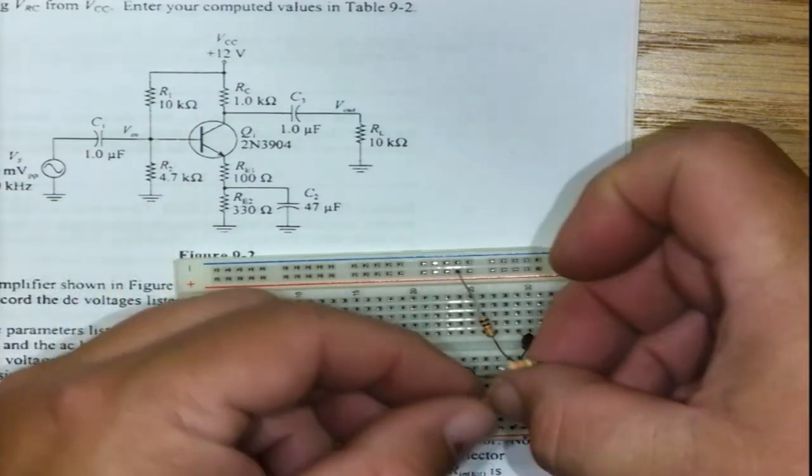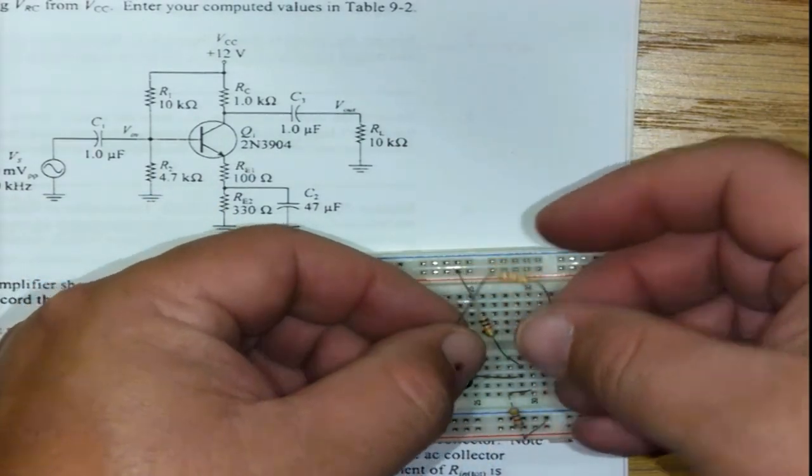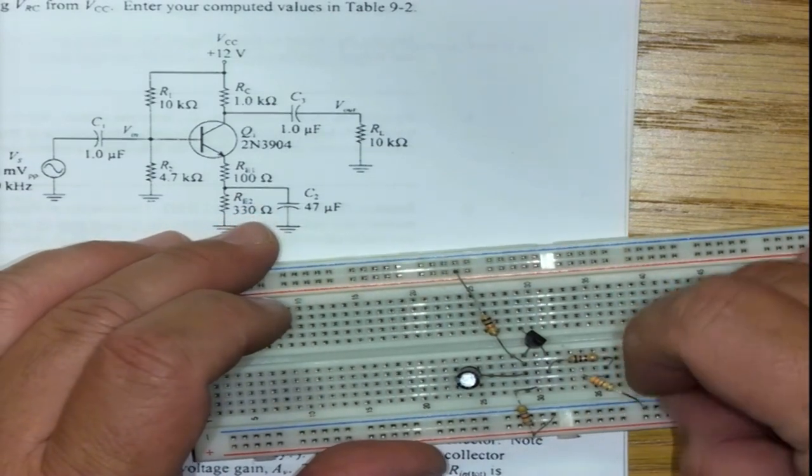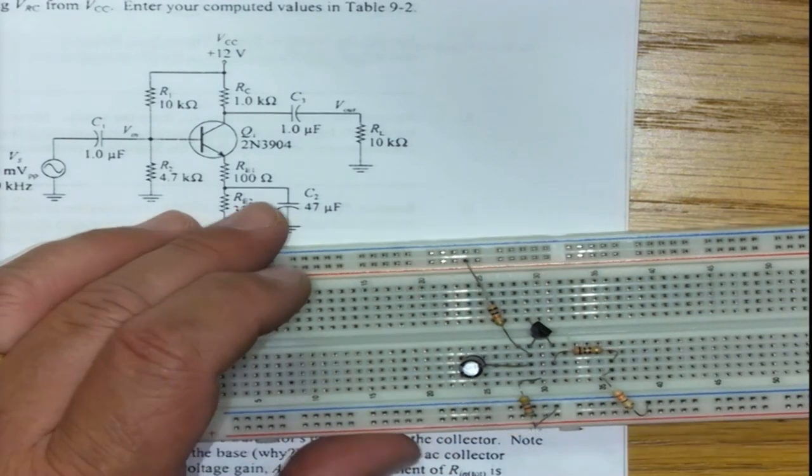RE2, 330 that is orange, orange, brown. RE2, I plug it in here, going to ground. Very nice.